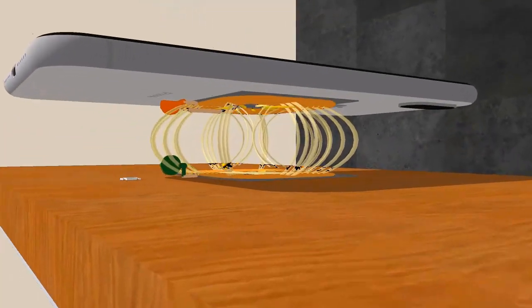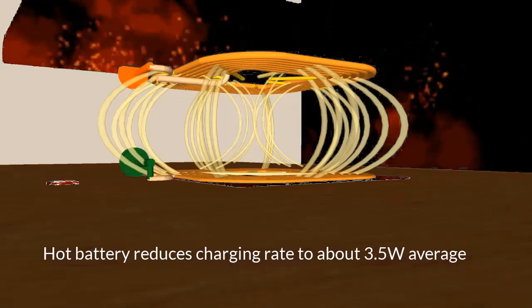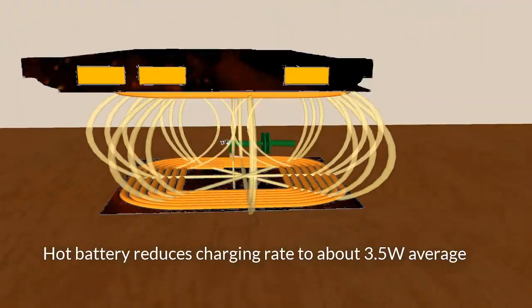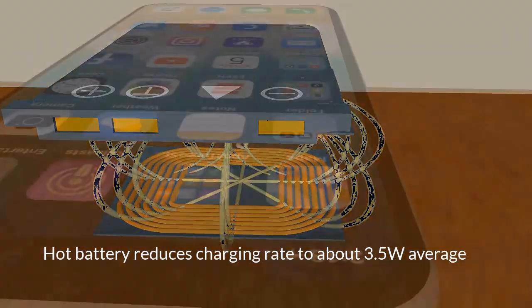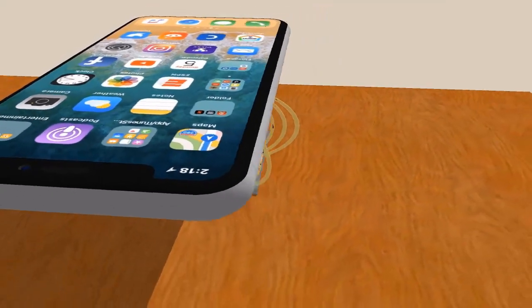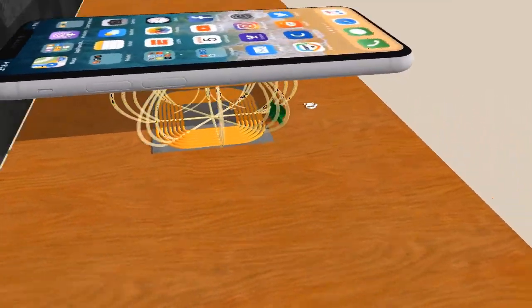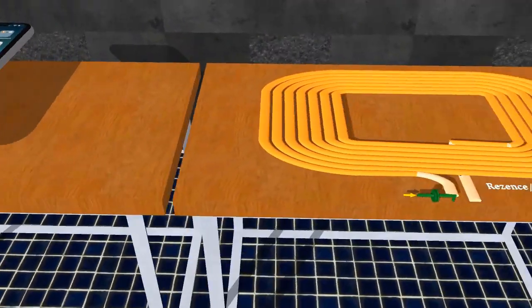You do get some flux when you put your phone flat, but it's pressing against a hot battery, and the battery reduces the charging rate to about 3.5 watts. That's why it takes two and a half hours typically to charge.